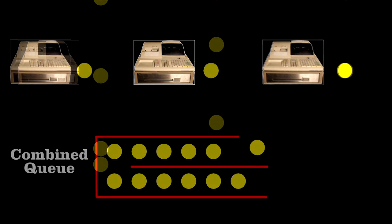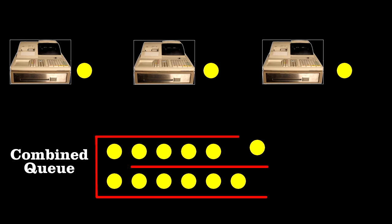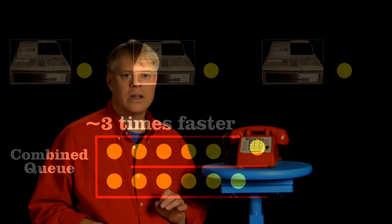Instead, they should make a single line feed multiple cashiers. For three cashiers, it's about three times faster than having a line for each cashier. Here's why.